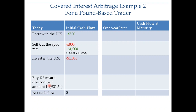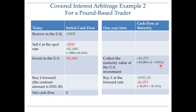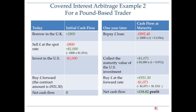Your net cash flow at time zero, at the beginning of the arbitrage transactions, is zero. A year goes by and you collect your US investment maturity value of $1,071, since the US interest rate is 7.1%. Then you sell those dollars and buy pounds as agreed. At the forward rate of $1.15, that generates 931 pounds for you. You then pay off your loan, with a payoff amount of 892 pounds at the UK interest rate.